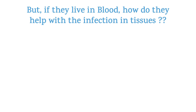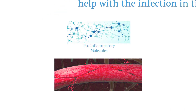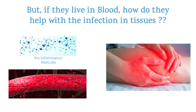But if they live in blood, how do they help with the infection in tissues? A very good question indeed. The pro-inflammatory molecules stimulate blood vessels to become leaky. Looser connections between the cells allow movement of fluid and molecules into the tissue. So now you see how important inflammation is, and so are these pro-inflammatory molecules. When you have swelling and that part is painful, red, and warmer compared to other parts, you have inflammation — which means the innate immune cells of your tissues are asking for help from the innate immune cells living in blood.